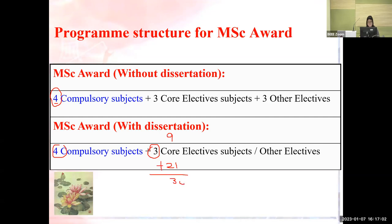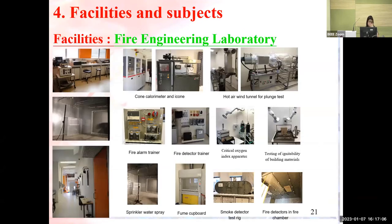In the next section, I will introduce the facilities and subject content. The credits required for graduation is 30 credits — 10 subjects at 3 credits each. Now for the facilities: we have the fire engineering laboratory on the 10th floor of the Z block.